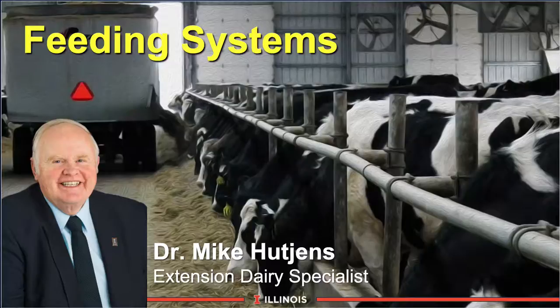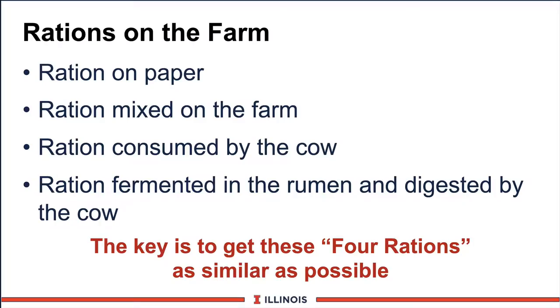This module will discuss elements of the feeding systems. When we look at the feeding system, basically there are different kinds of rations on the dairy farm. The first ration we talk about is the one that is on paper, put together by the dairy nutritionist, where we calculate what the cow really requires and how much feed it will take to get the job done.